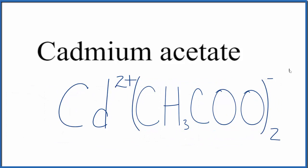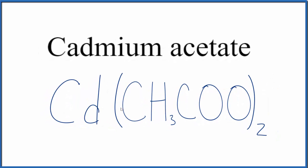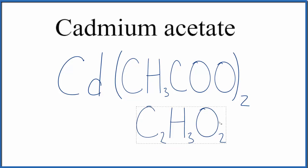Let's get rid of these charges. And this is the formula for cadmium acetate, Cd(CH3COO)2. And remember, instead of this CH3COO, you could have had this in the parentheses as well.